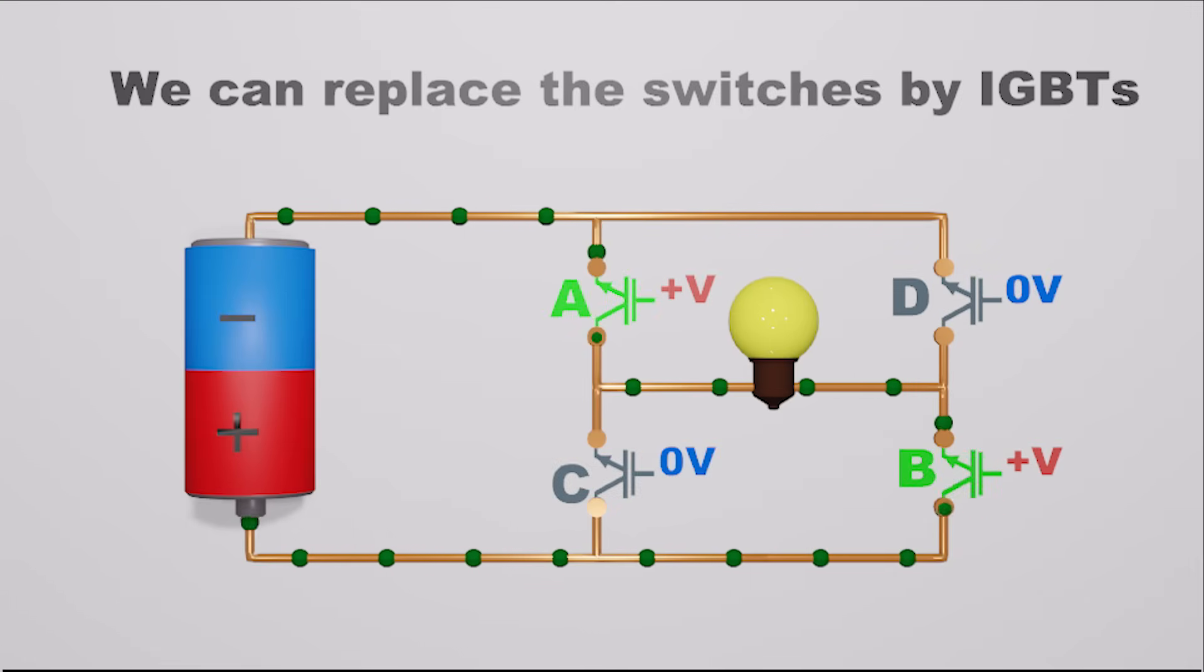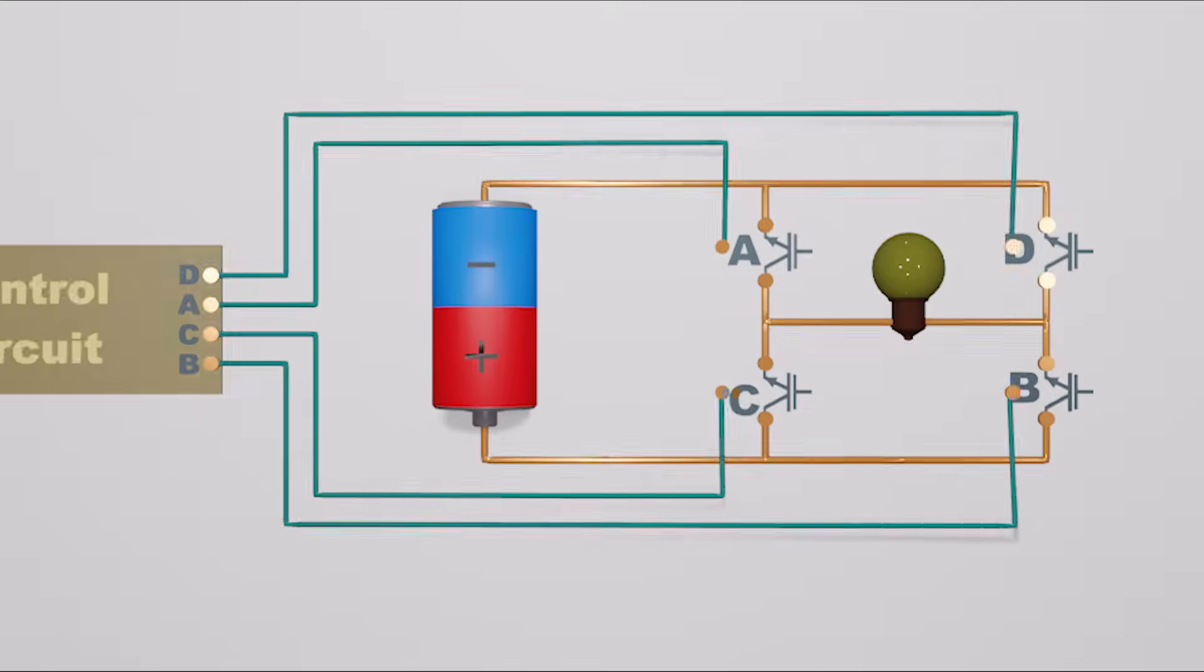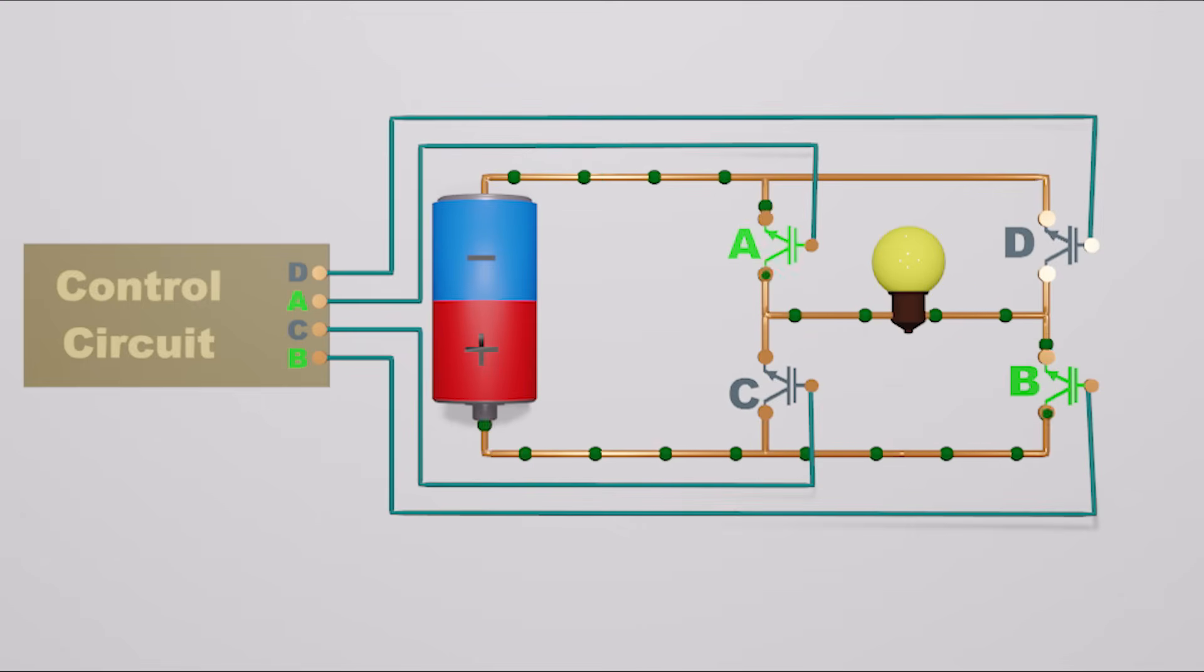To work these IGBTs correctly, accurate control signals must be provided to A, B, C and D. These control signals are generated by a separate circuit which can control the frequency of the output AC signal.